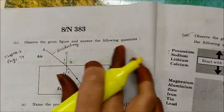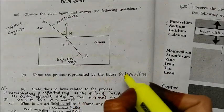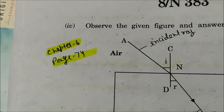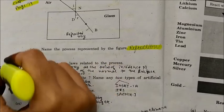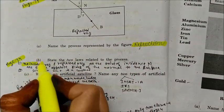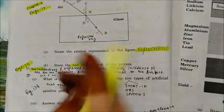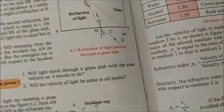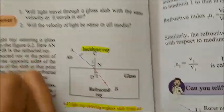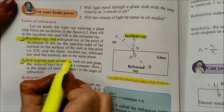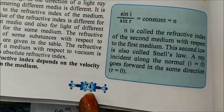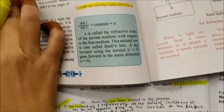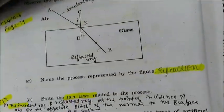Observe the given figure and name the process — this is refraction of light, taken from chapter 6, page number 74. State the two laws related to the process. The first law and the second law are both the laws of reflection, found on page number 74 of your textbook.